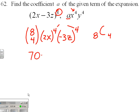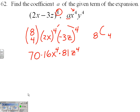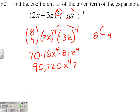I need 2 to the 4th — that's 16x to the 4th. I need negative 3 to the 4th — the negative to the 4th is positive, and 3 to the 4th is 81 — and I need z to the 4th. That leaves me with 70 times 16 times 81, which gives 90,720 x to the 4th z to the 4th.